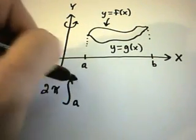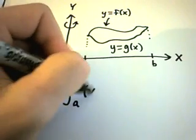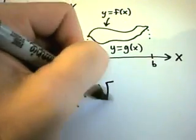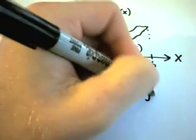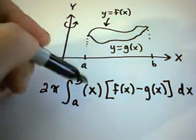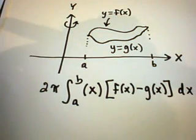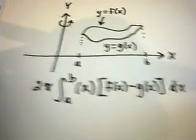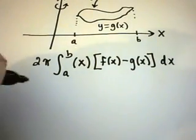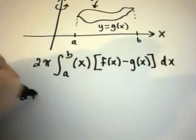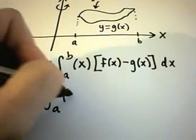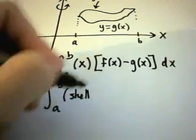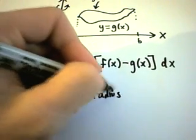Your limits of integration go from a to b. You multiply by x, and then you take the top function minus the bottom function — which is analogous to finding areas between curves, with the exception of the x out front. I like to think about this as 2π times the integral from a to b of the shell radius times the shell height.